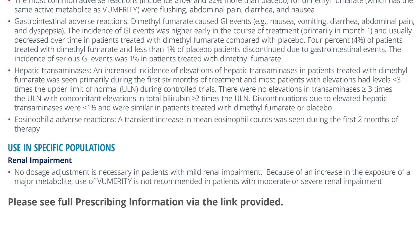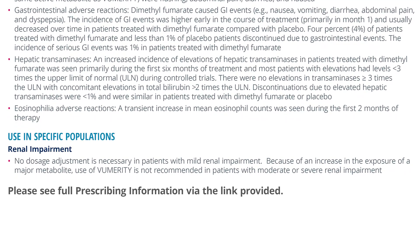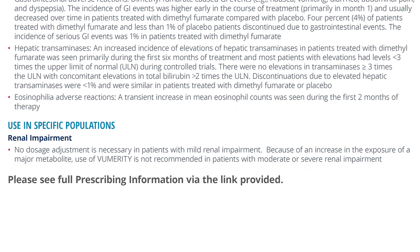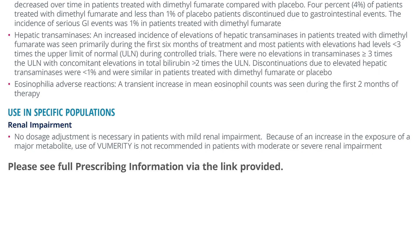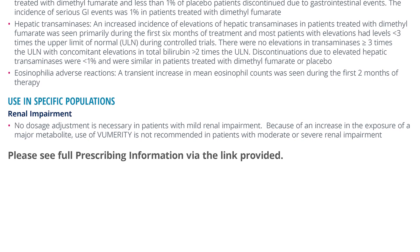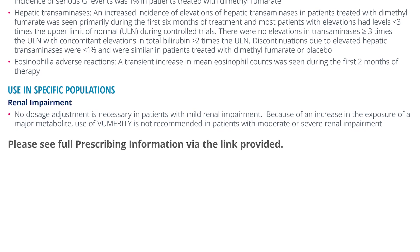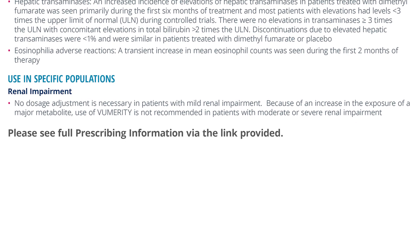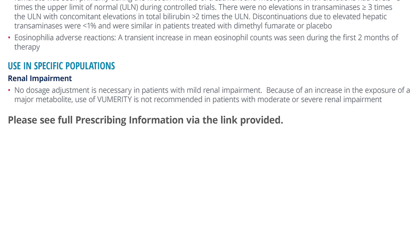Hepatic transaminases: An increased incidence of elevations of hepatic transaminases in patients treated with dimethyl fumarate was seen primarily during the first six months of treatment, and most patients with elevations had levels less than three times the upper limit of normal during controlled trials. There were no elevations in transaminases ≥3 times the ULN with concomitant elevations in total bilirubin greater than two times the ULN. Discontinuations due to elevated hepatic transaminases were less than 1% and were similar between dimethyl fumarate and placebo. A transient increase in mean eosinophil counts was seen during the first two months of therapy.